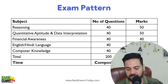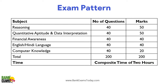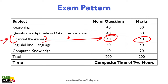Let me tell you the exam pattern. There is quant, reasoning, English, and financial awareness — 40 questions, 40 marks. This becomes a deciding factor because most of the time there is variation here: marks can range from 2-3 to 30-30. So you need to score good marks here. It's a bit difficult to improve your score in quant and reasoning, whereas in financial awareness there is more variation.